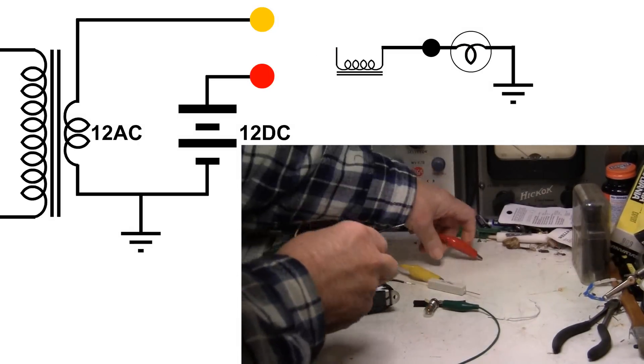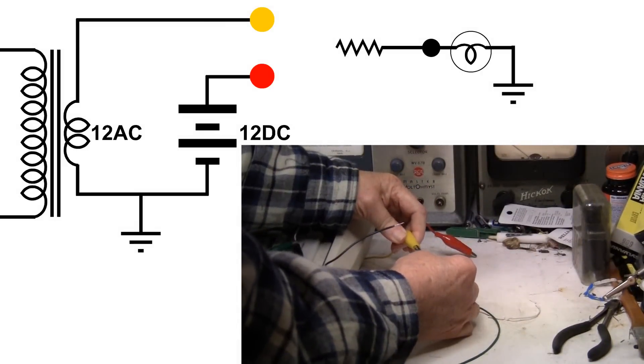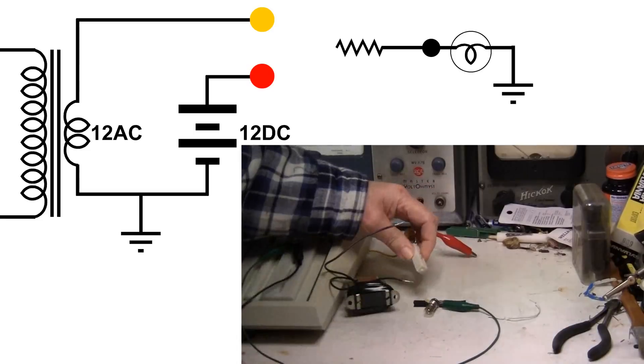Okay, let's go to AC. 75 ohm resistor with AC.